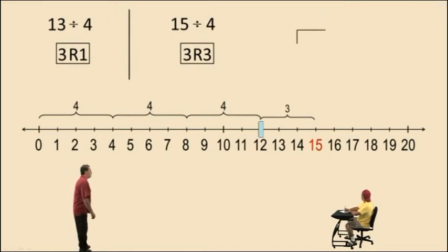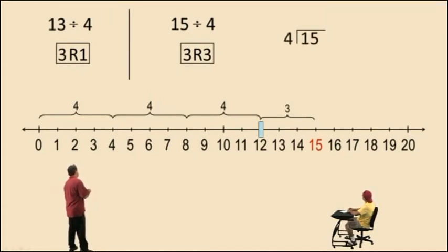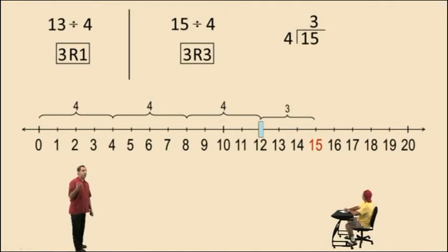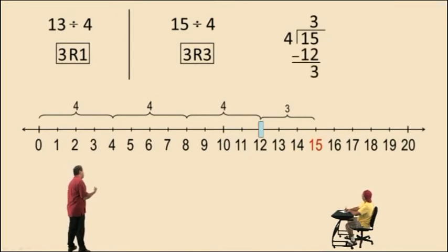Now let's do the division using the long division sign. We put the 15 inside and the 4 outside, because we're trying to figure out how many 4's go into 15. So 4 goes into 15 three times. 4 times 4 is 16 — that's too much. 4 times 3 is 12. So 4 times 3 is 12, and then we subtract. So we have 3 remaining units.